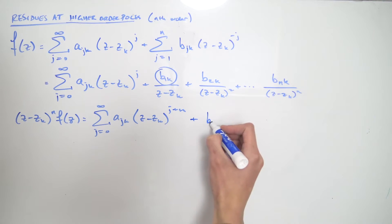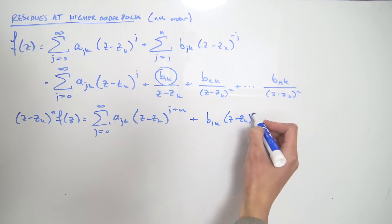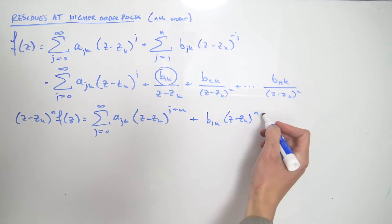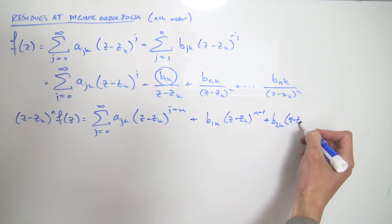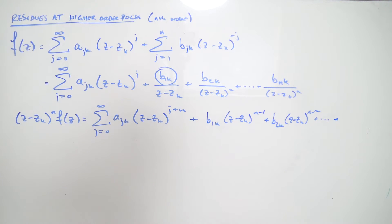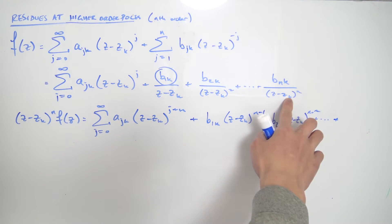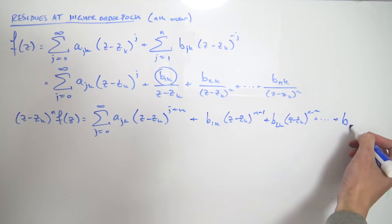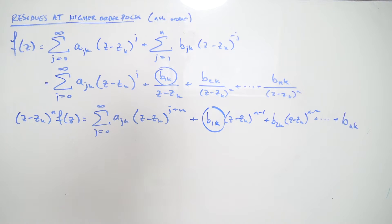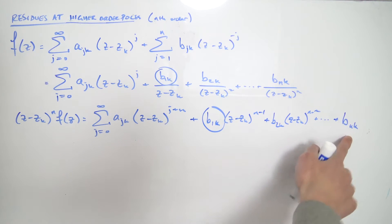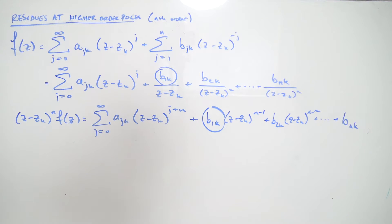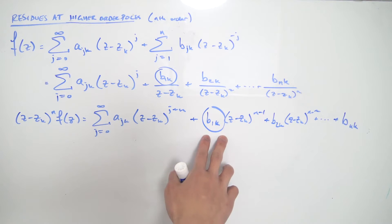On the principal part, we get b_sub_1k multiplied by (z - z_k)^(n-1), plus b_sub_2k times (z - z_k)^(n-2), and so on, leaving us with b_sub_nk as the last term. If we plug z_k in now, all the (z - z_k) terms go to zero, leaving only b_sub_nk — but we don't want b_sub_nk, we want b_sub_1k. So we need another approach to isolate b_sub_1k.